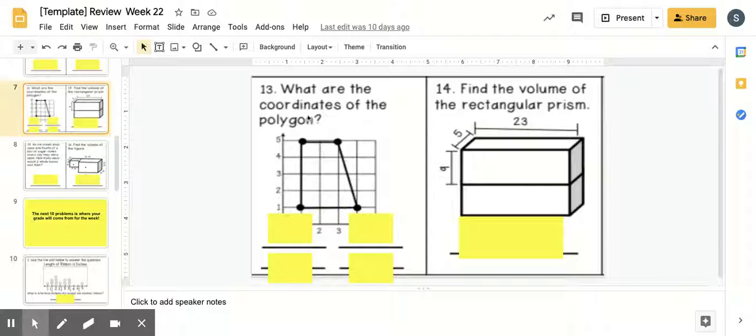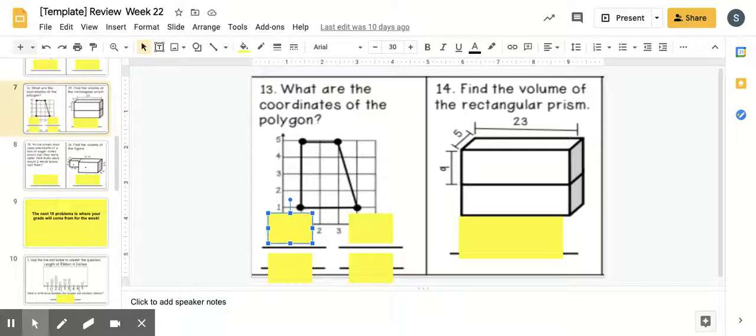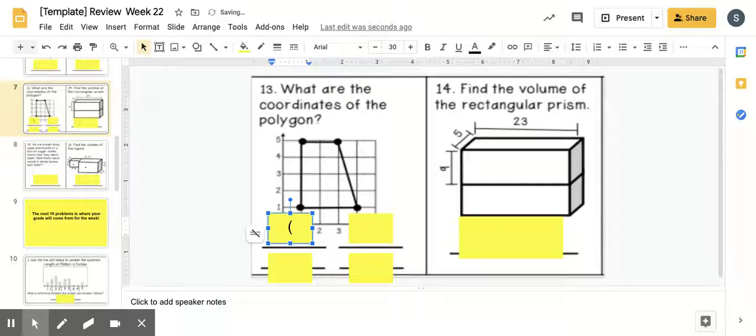So, number 13, it says, what are the coordinates of the polygon? If we start here in this lower left corner of this polygon, this polygon is a trapezoid by the way. The coordinates for this one are 1, 1. So, on your paper, you're going to use parentheses, 1, 1, and close your parentheses.